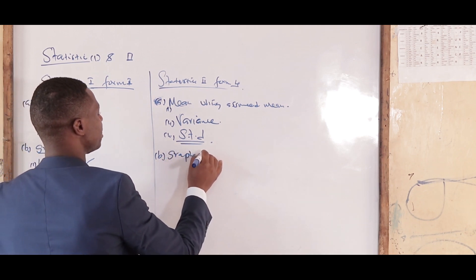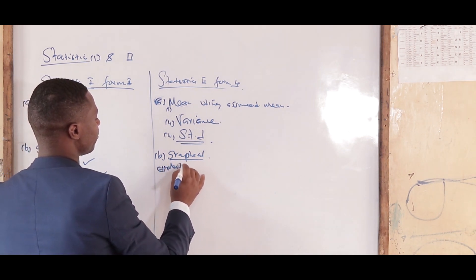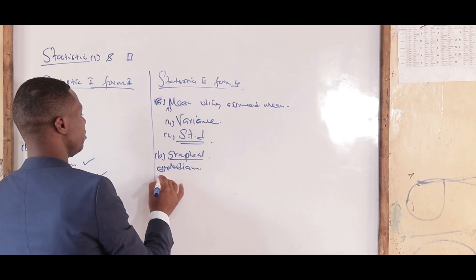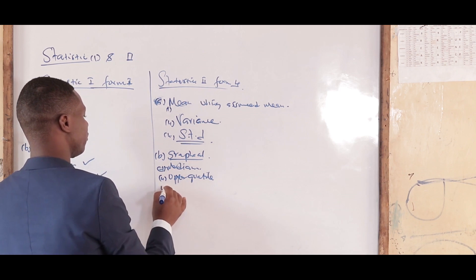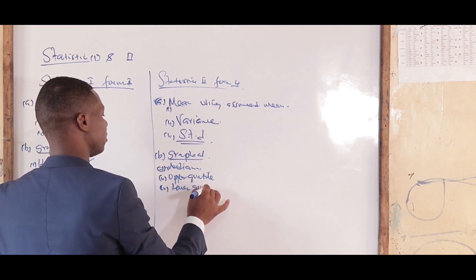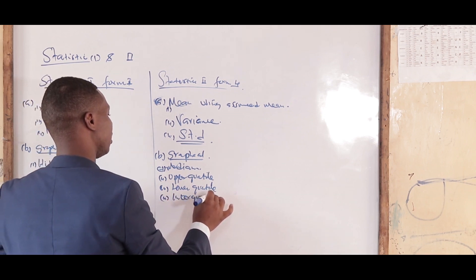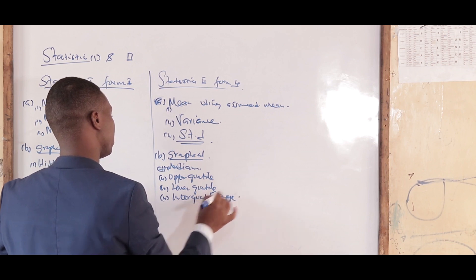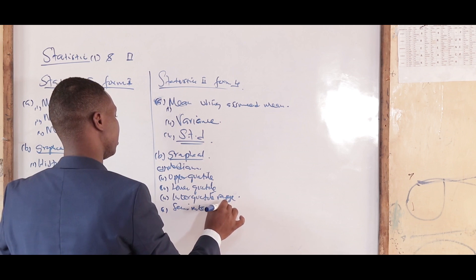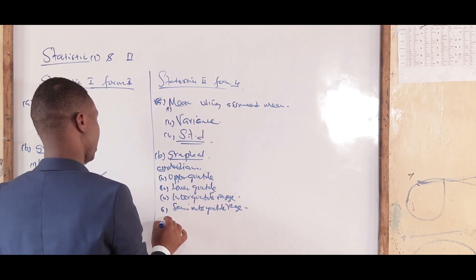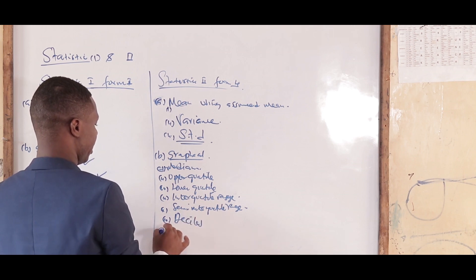Part B of Statistics 2 is also the graphical part. From it you have to find: the median, the upper quartile, the lower quartile, the inter-quartile range, the semi inter-quartile range, deciles, and percentiles.